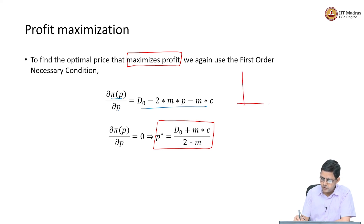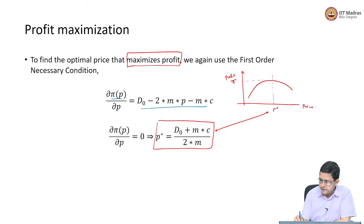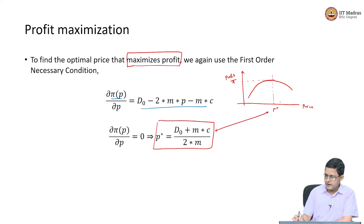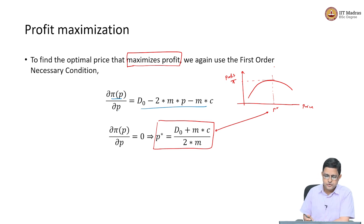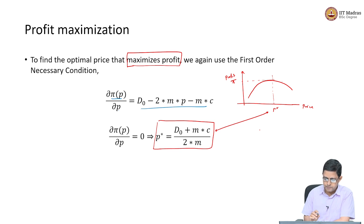I expect the profit curve to also be a concave curve. On the x-axis is the price, and on the y-axis is profit π. There is some value P* given by this expression at which the profit is maximum. Just like for revenue maximization, you should find the second derivative and make sure the curve is concave and we are not getting the minimum value of profit. But we will leave that mathematical part out and focus on the pricing part.